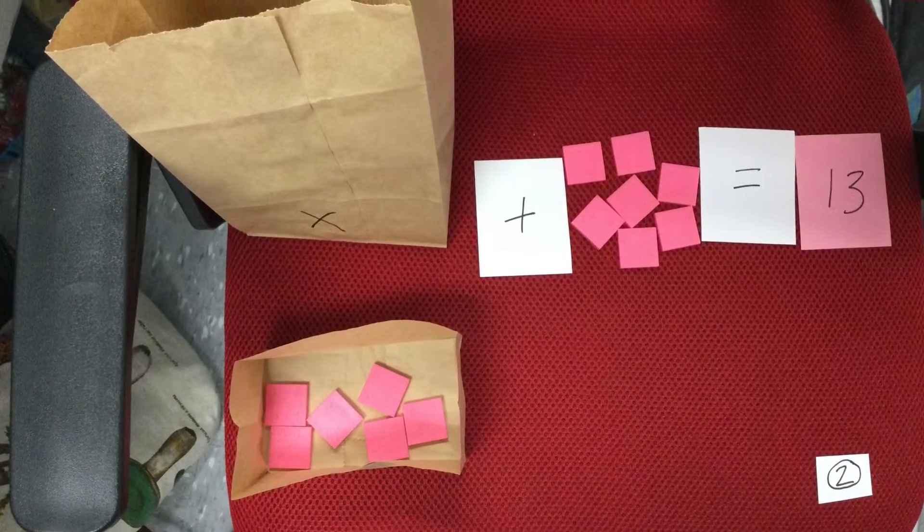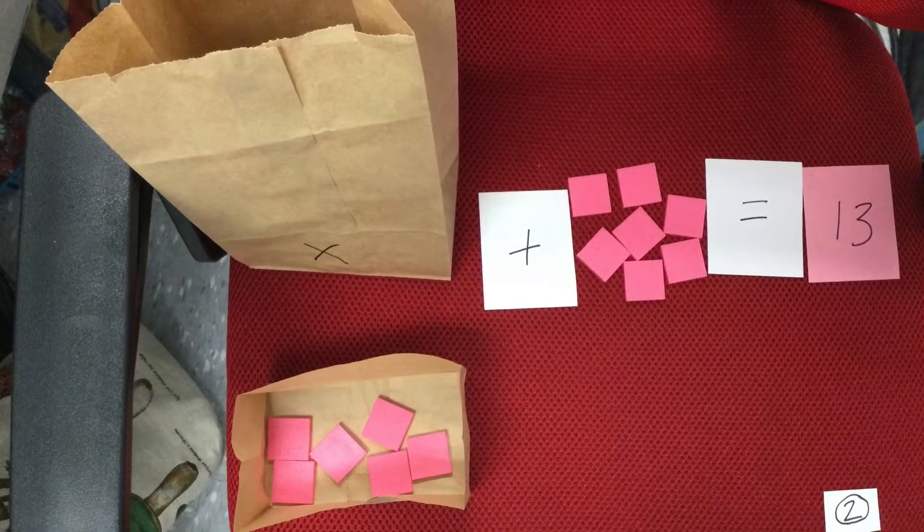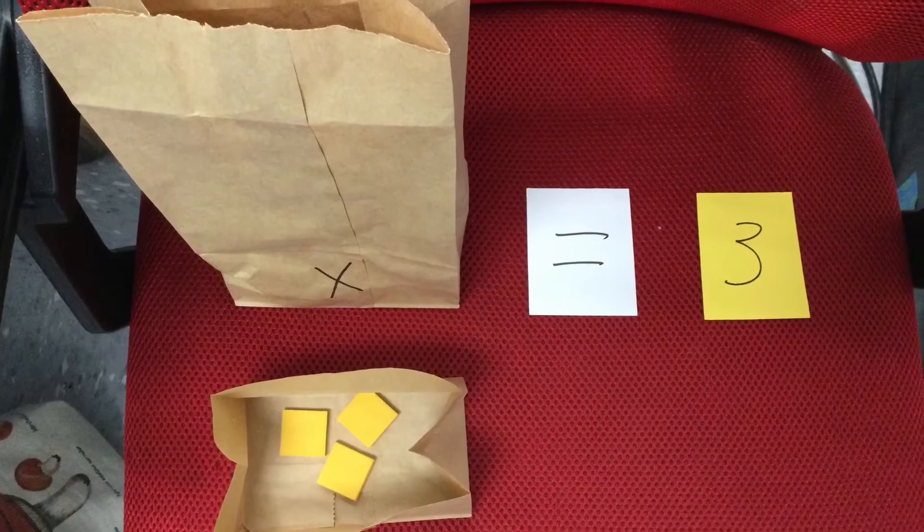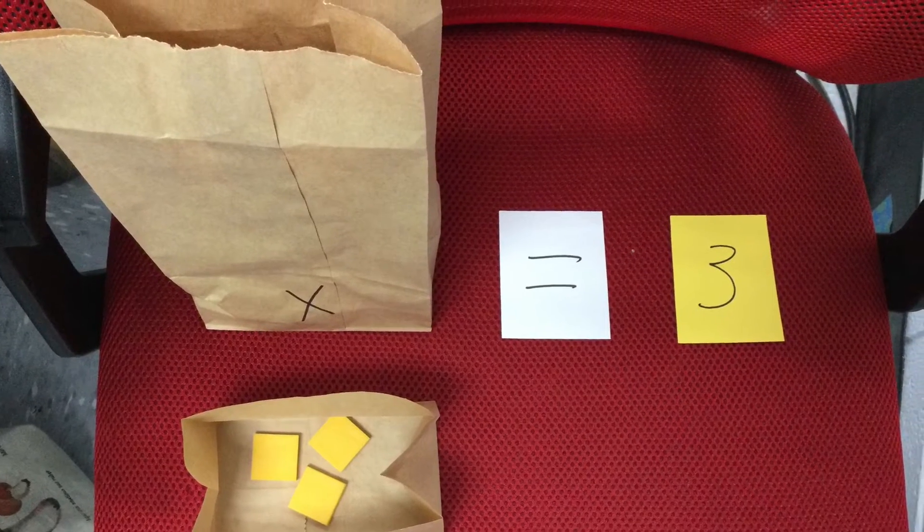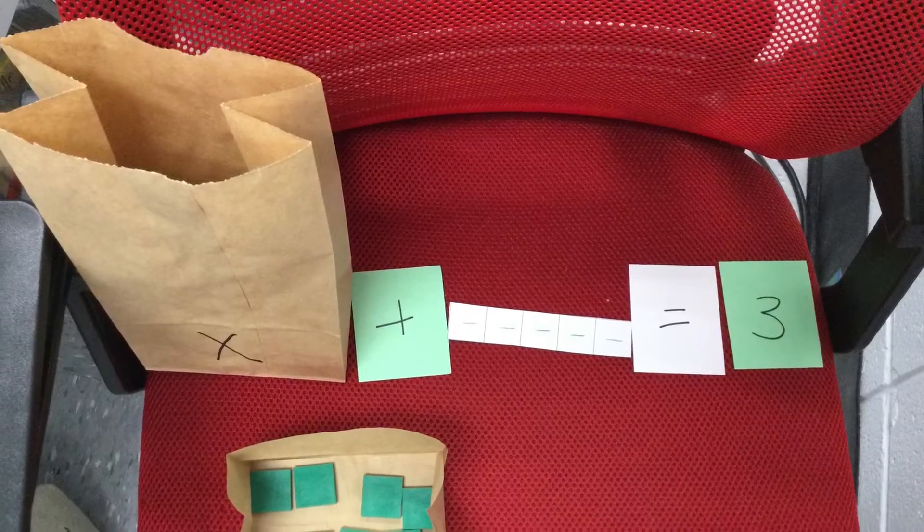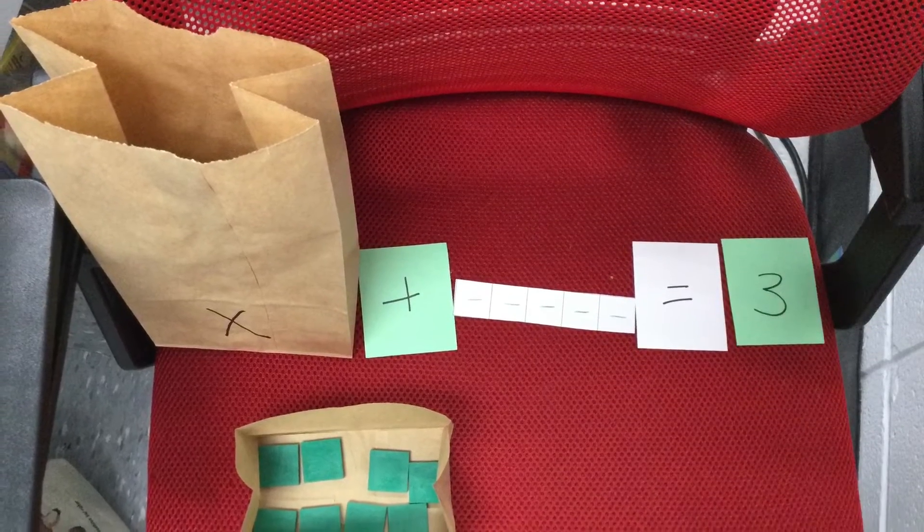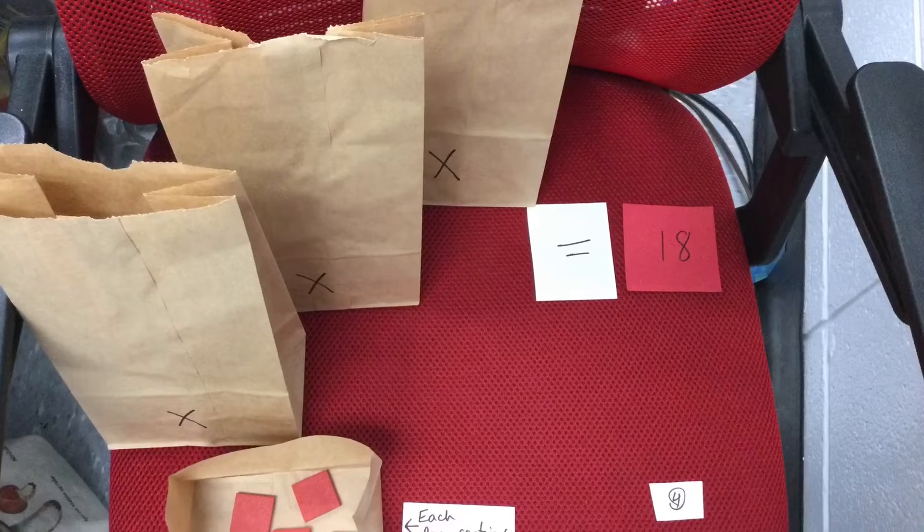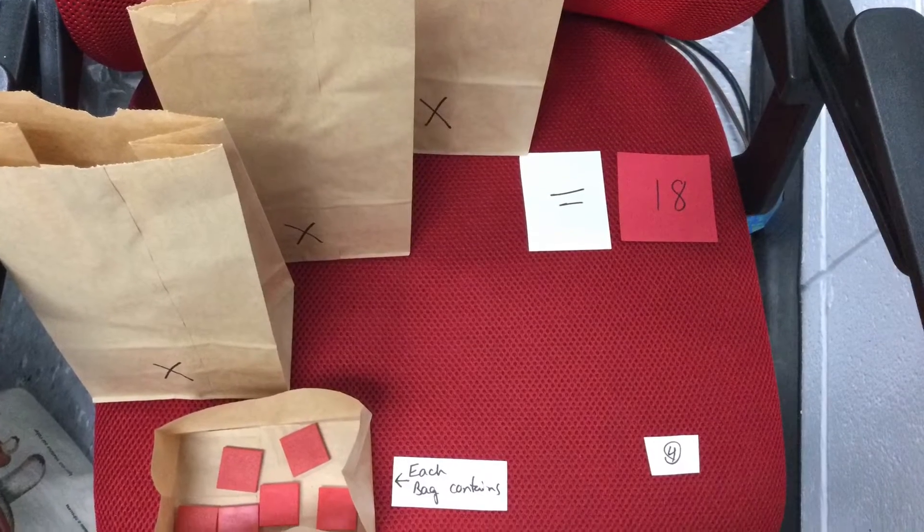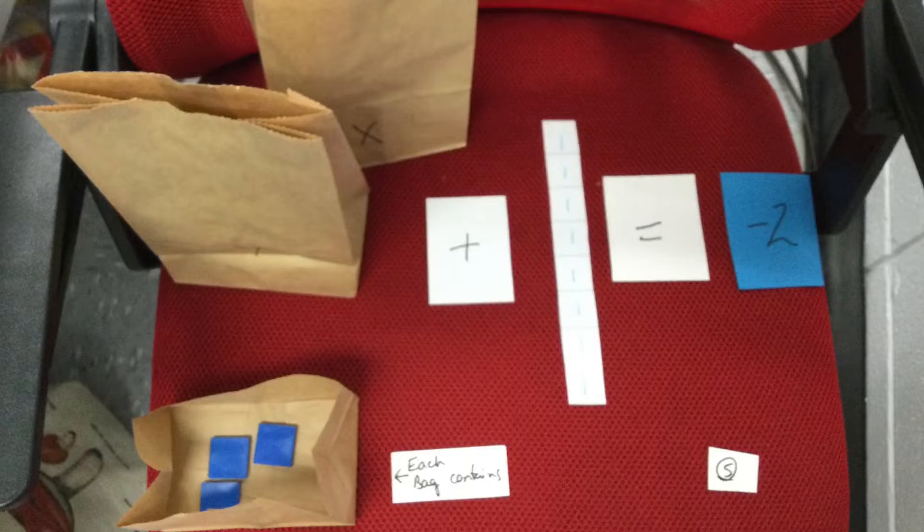This is an activity I came up with to start a review with my 8th graders on one and two-step equations. I wanted to back up and help them remember what the equation meant, not just how to solve for x, but the number sense of what equations mean, how one side is equal to the other, and how we find what's missing.